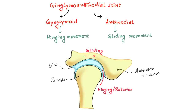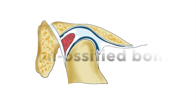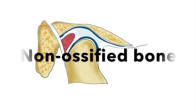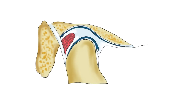The TMJ is formed by the mandibular condyle and the mandibular fossa of the temporal bone. Here you can see the temporal bone and here is the condyle. The articular disc separates these two bones from direct articulation. The TMJ is classified as a compound joint; by definition, a compound joint requires the presence of at least three bones, yet the TMJ is made up of only two bones.